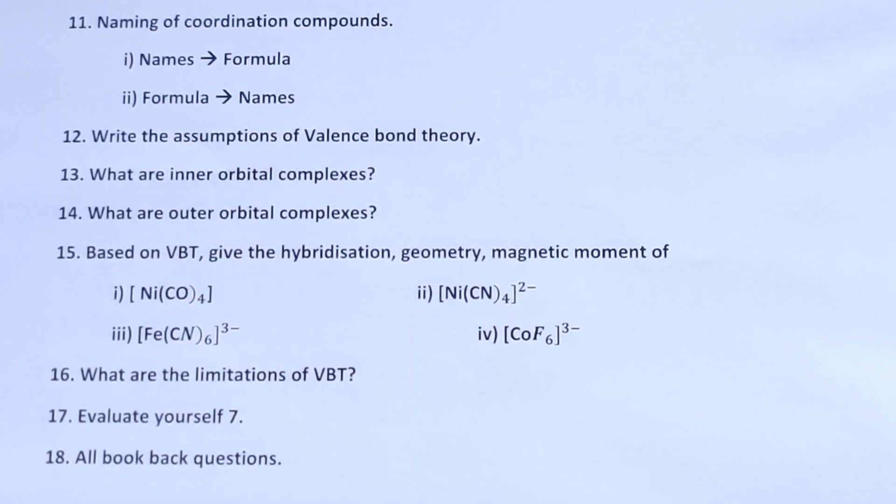Next, write the assumptions of valence bond theory. What are inner orbital complexes, outer orbital complexes. That is why the examples.